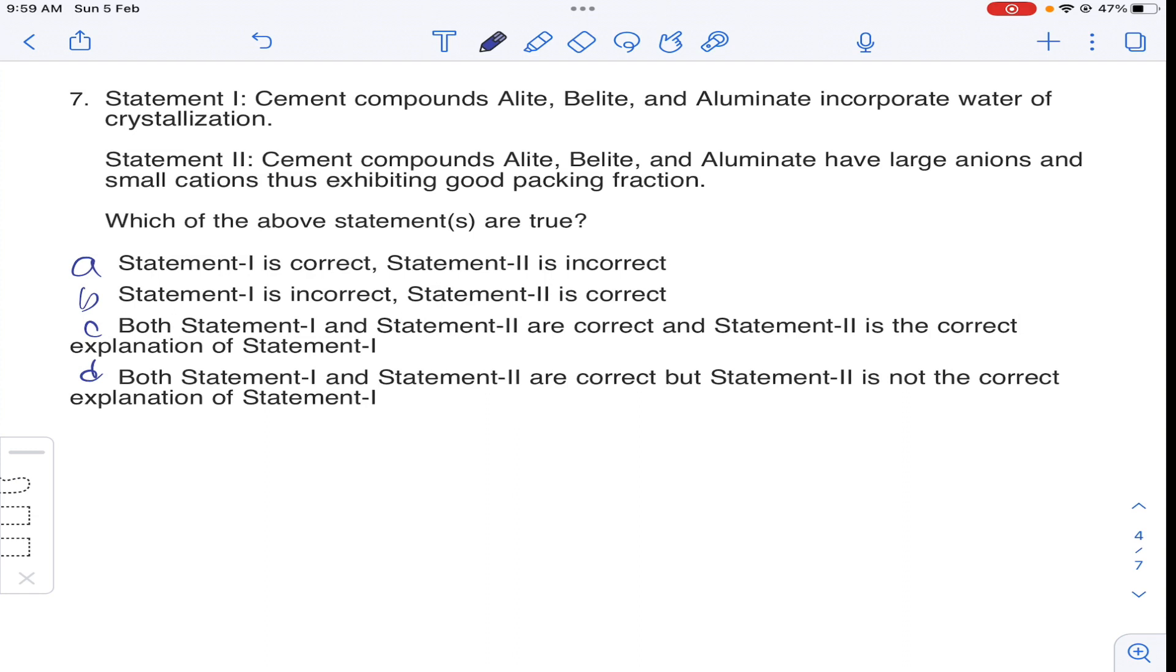Coming to question number 7. He has given two statements. Cement compounds alite, belite, aluminate, incorporate in water of crystallization. So yes, it is a correct statement. Alite, belite, aluminate, incorporate water of crystallization within their structure in order to fill the space left around cation.